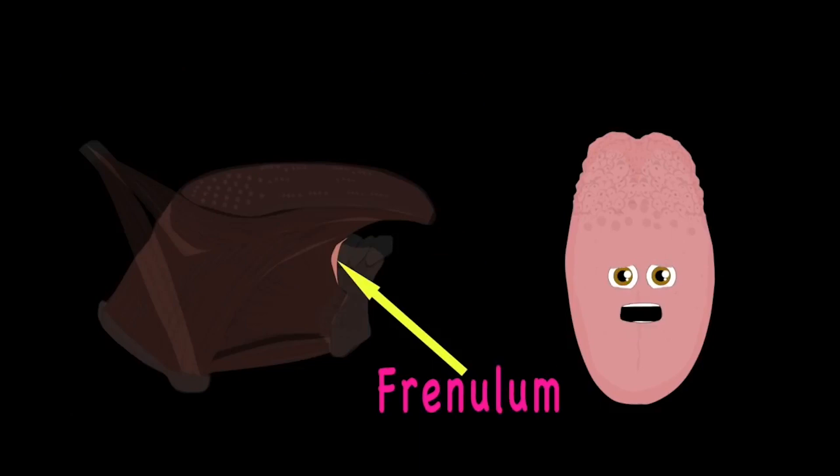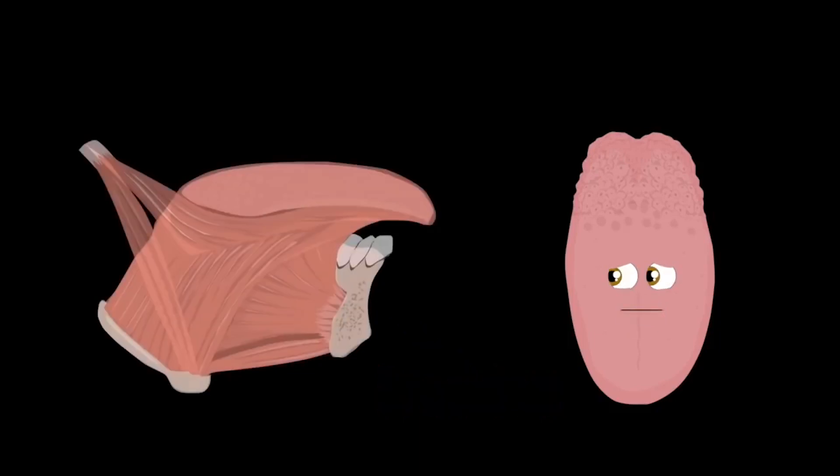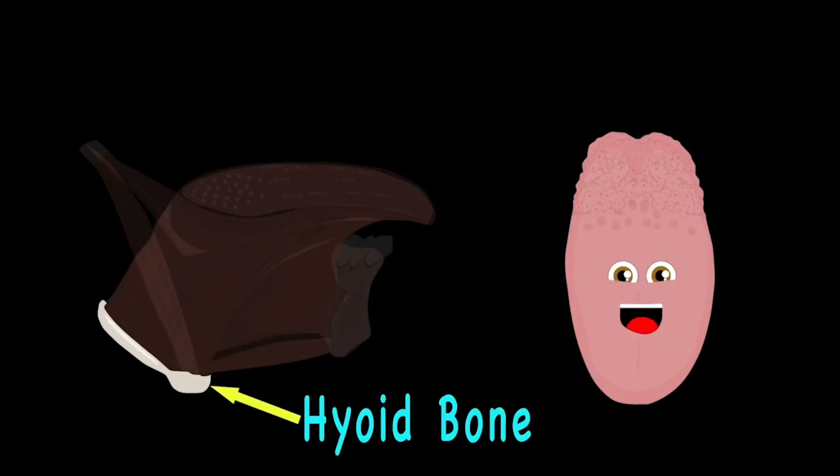The frenulum is the tether of the front bottom of the tongue. It holds your tongue in place so your mouth can move freely while it runs. The back of your tongue is anchored by the hyoid bone. The tongue is vital for many things I will show.